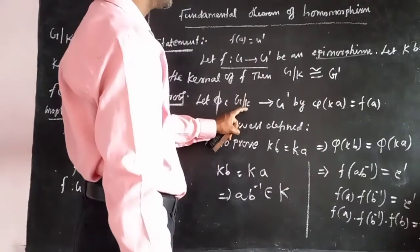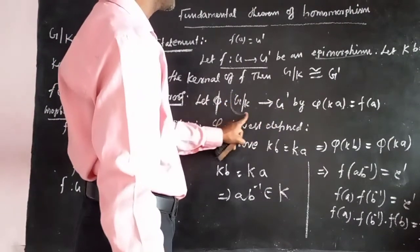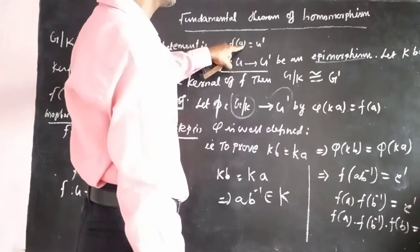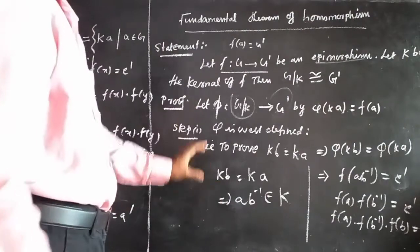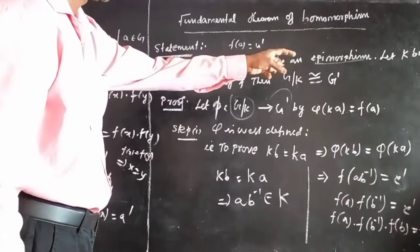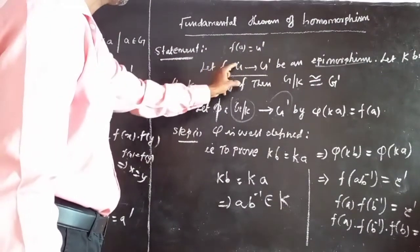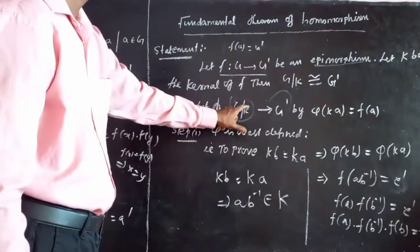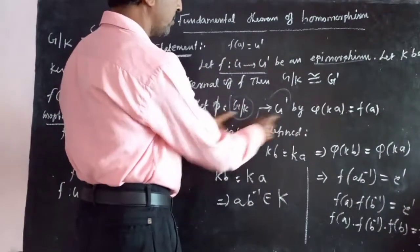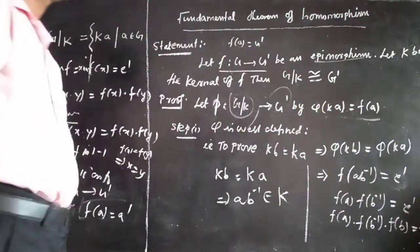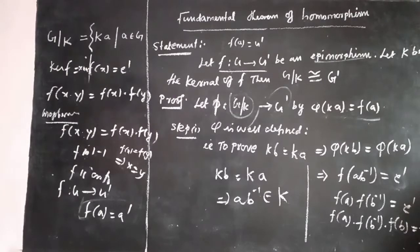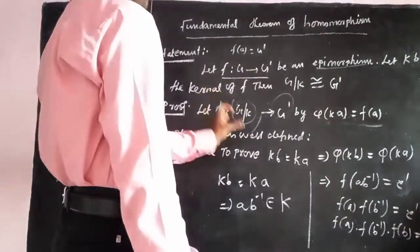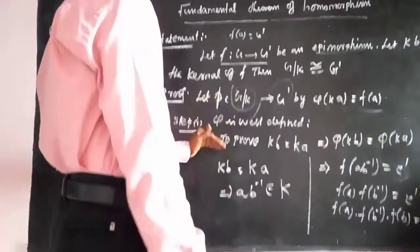So φ: G/K → G', and φ(KA) = F(A). So π of K is equal to φ of K. We need to prove four things for the isomorphism: φ is well-defined, φ is one-to-one, φ is onto, and φ is a homomorphism. Well-defined is the converse of one-to-one: if x equals y, then F(x) equals F(y).